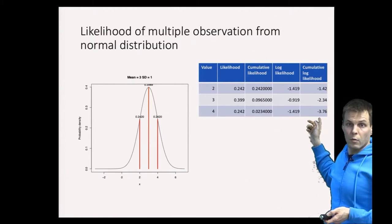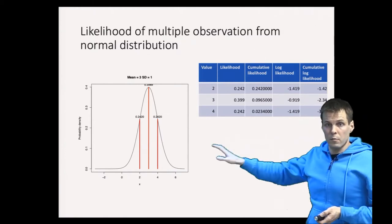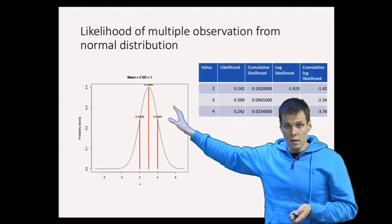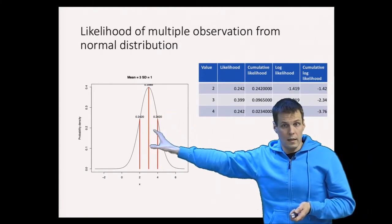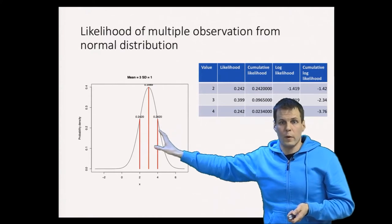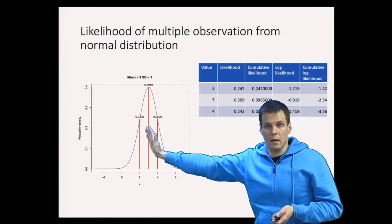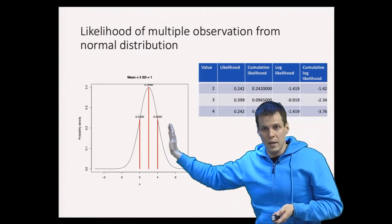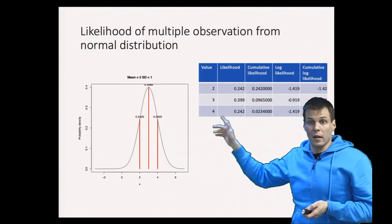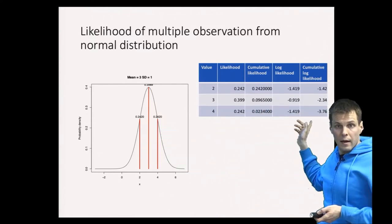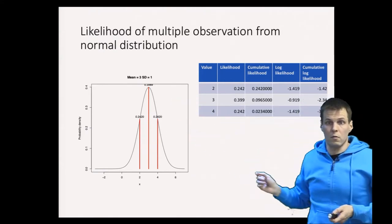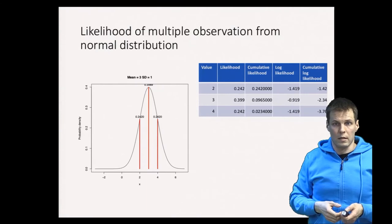This is the maximum likelihood estimate — the maximum likelihood we can achieve by shifting the mean. The log likelihood is nearly always a negative number, so increasing it means it gets closer to zero. With a normal distribution with standard deviation of one, when we set the mean at the optimal value, that is the maximum likelihood. If we shift it right or left from there, the likelihood would decrease. The value of the mean that maximizes the likelihood is called the maximum likelihood estimate.